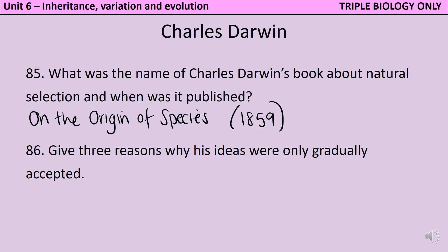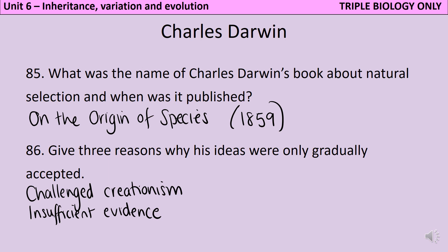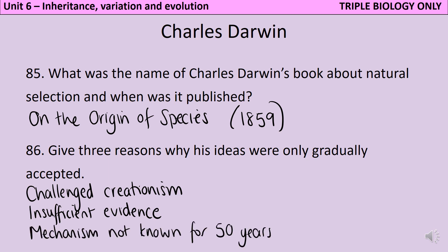There were a number of reasons people were slow to accept Darwin's theory. His ideas contradicted the belief that God had made all animals and plants in exactly the form we currently find them. He also lacked evidence to back up his ideas, essentially asking people to trust him on faith. Additionally, the mechanism of inheritance and variation wasn't known until 50 years after the theory was published, meaning that even though he could explain what he thought was happening, he couldn't explain why or how it was happening.